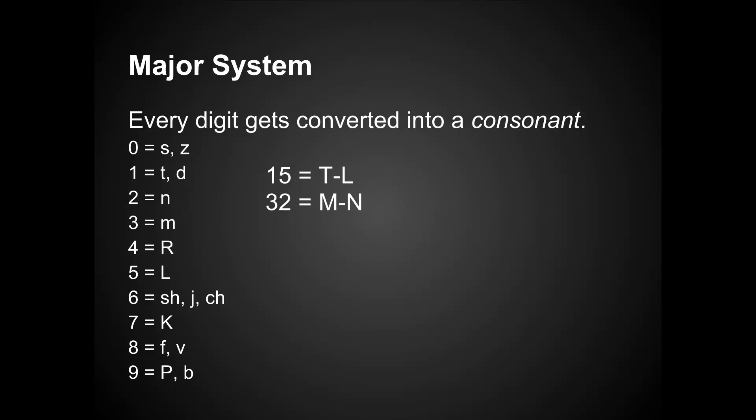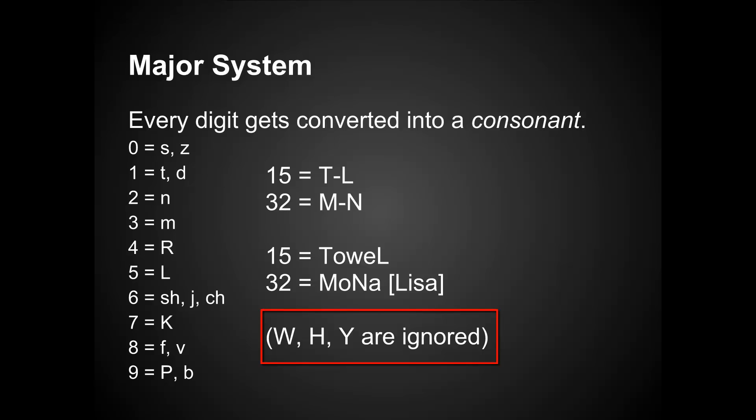So we can go to some examples. 15 would be T or D, and then L. 32 would be M and N. W, H, and Y are ignored — all of those consonants are ignored. So you would find a word that has the first two consonants that are the same as the sounds representing your number. So 15 is T, L — towel would work. For 32, you could use the M and N from Mona Lisa. The Dominic system example I showed earlier had 15 as Albert Einstein and 32 as Charlie Brown — so you get a completely different way of generating images, but it doesn't matter which method you use.